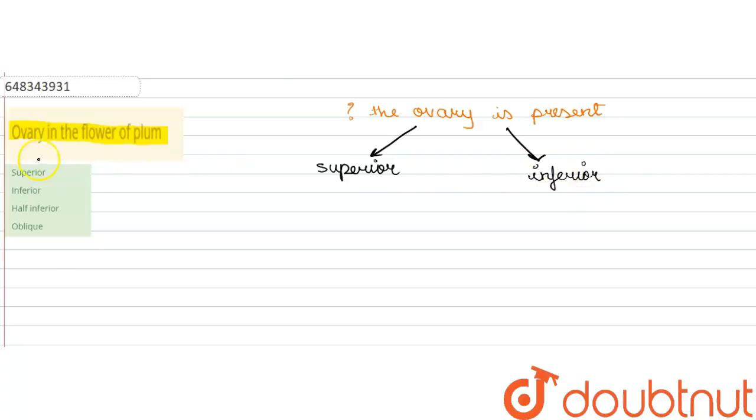The superior ovary is the ovary which is found above the other floral parts, whereas the inferior ovary is the ovary which is found below the floral parts.